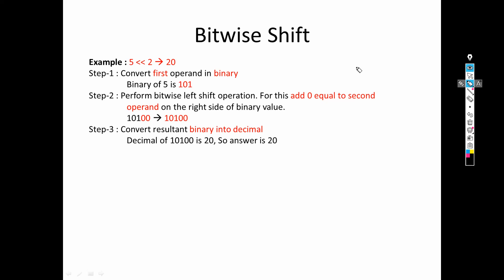Now what do we mean by bitwise SHIFT? Here you can see the example we are taking — this is the bitwise left SHIFT operator. The operator uses two angular brackets like this. The first operand is 5 and the second operand is 2. There are three steps. First, we need to convert only the first operand into binary. In bitwise AND, OR, and XOR we convert both operands, but in bitwise SHIFT we only convert the first operand. Binary of 5 is 101.